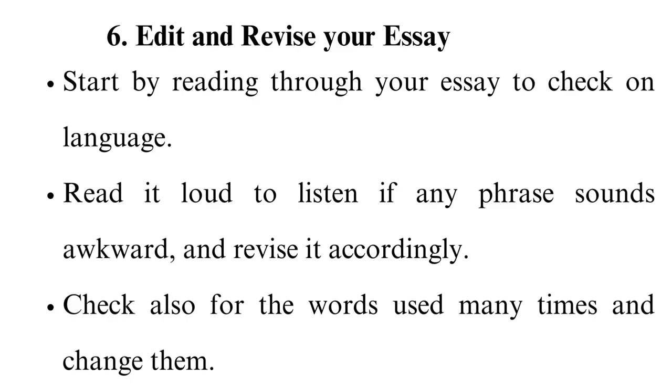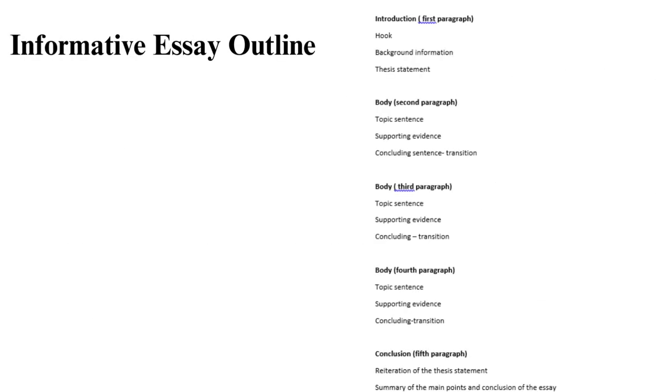Informative essay outline. An informative essay should have a five-paragraph outline as follows. Introduction first paragraph: hook, background information, thesis statement. Body second and third paragraphs: topic sentence, supporting evidence, concluding sentence, transition. Conclusion fifth paragraph: reiteration of the thesis statement, summary of the main points and conclusion of the essay. You should follow the above structure as you write your essay.